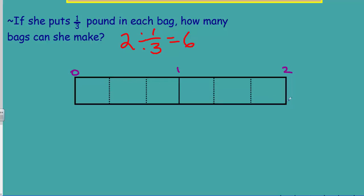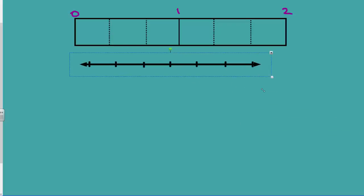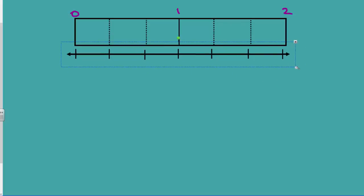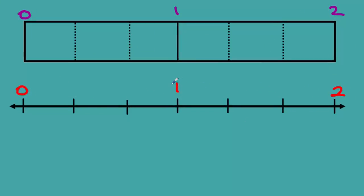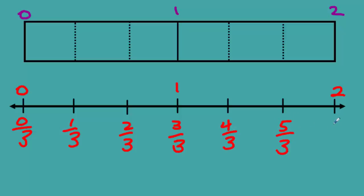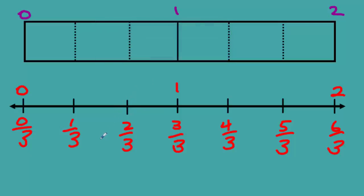Let's get the tape diagram out. Here we have three equal pieces per pound — zero, one pound, two pounds — each pound divided into thirds, giving us six pieces total. Let's model the same thing on a number line: zero, one third, two thirds, three thirds equals one whole, four thirds, five thirds, six thirds. You can see how closely the tape diagram relates to the number line.